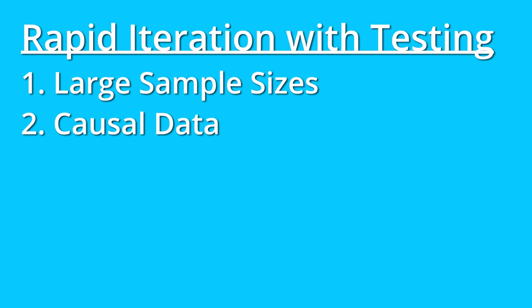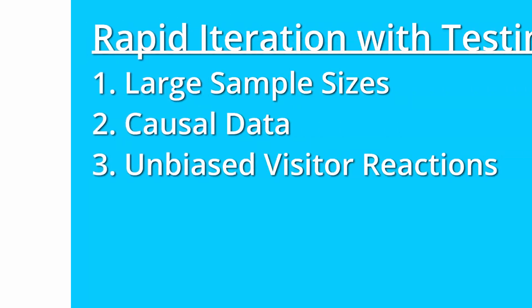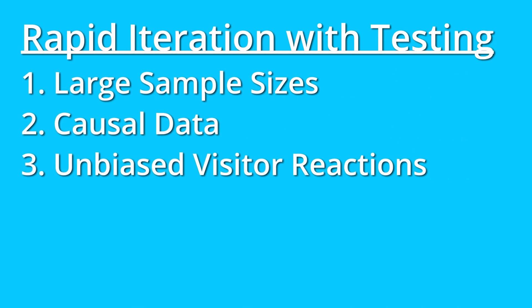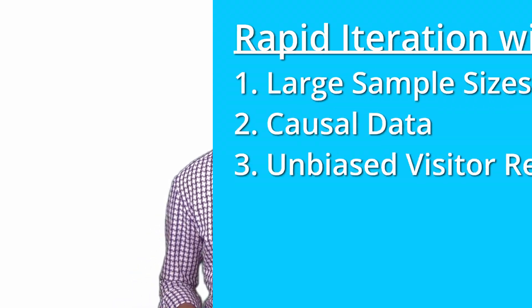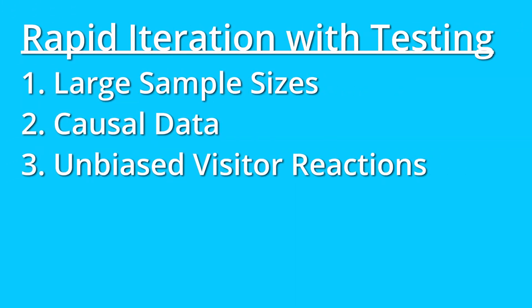The other important thing about testing data is that it's causal data. When you make a change, you've caused or influenced something to happen. Whereas when you're just showing someone a design, there's no change — they're simply reacting to that design. When visitors don't know they're in a test, they react to the experience and that reaction is unbiased, which allows you to compare variations in an unbiased way to understand their natural behavior. So testing is so important because you eliminate bias, you have a large sample size, and you're getting causal data.